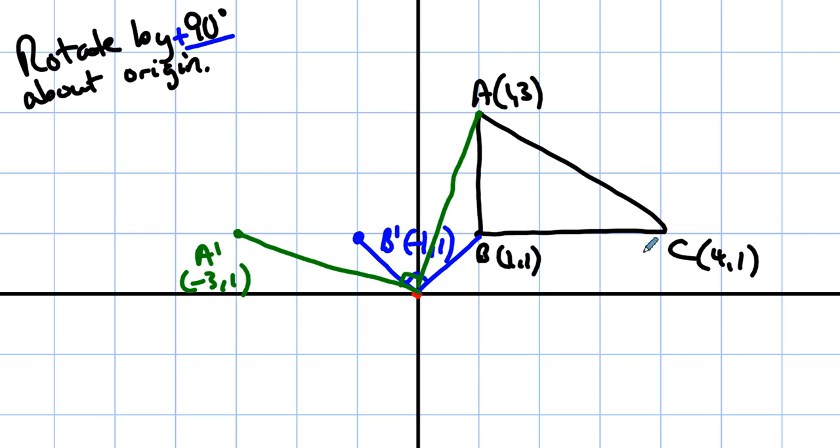We're going to come out from the origin to right there. That's a 90 degree angle. We're going to come out just as far, whatever this distance is, this distance has to be, and this is the point (-1,